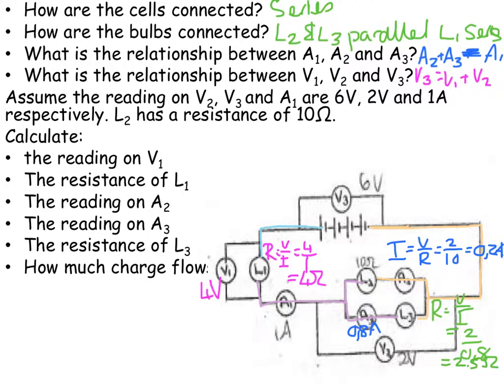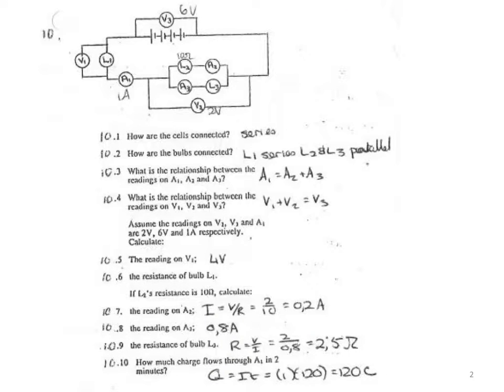And how much charge flows? My picture's landed up going over there, so I don't know where we want to get the charge going through. Ah, here we go. How much charge flows through A1 in 2 minutes? So we're going through A1 over there. Q is equal to I times T. The current strength is 1 amp. The time is 120 seconds for 2 minutes, and therefore I get 120 coulombs.